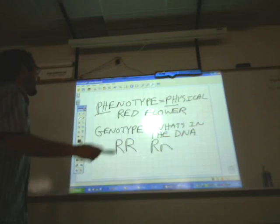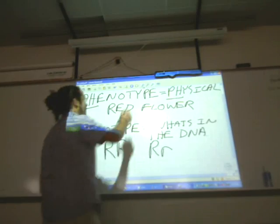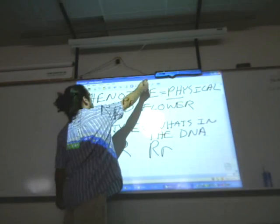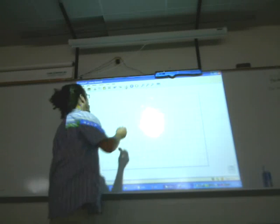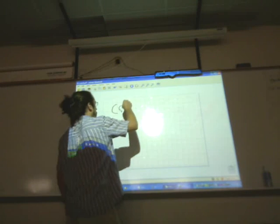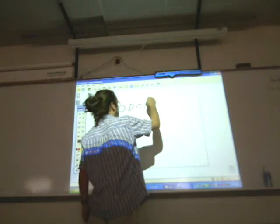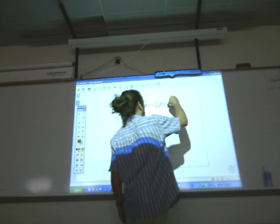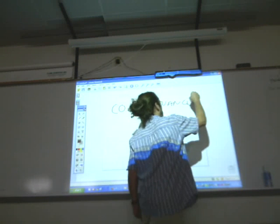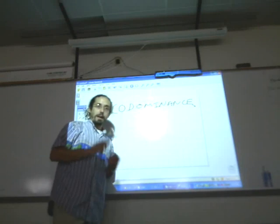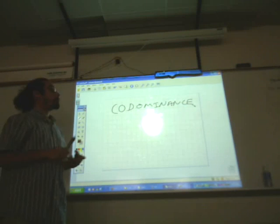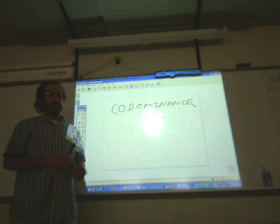That's pretty important. Last thing is co-dominance. Co-dominance. Co means to share the dominance. That means we can have traits and both traits are dominant, which means they can both show at the same time.